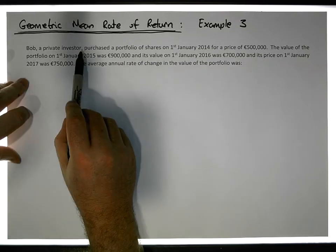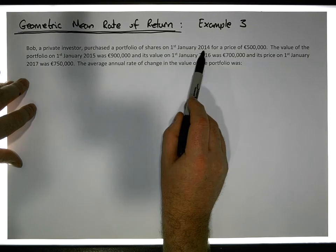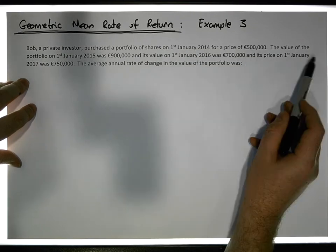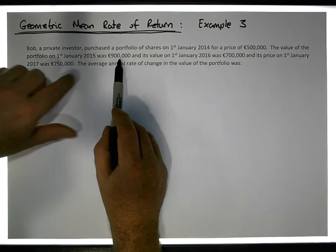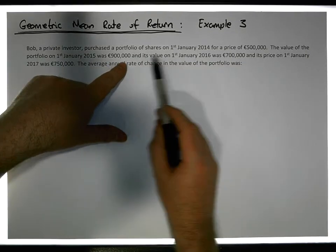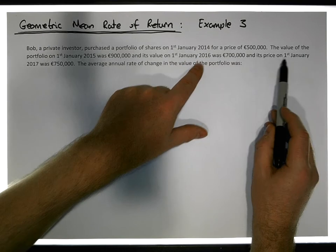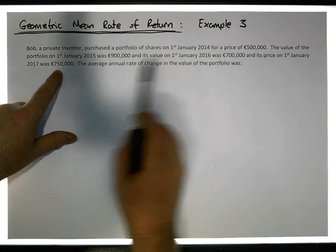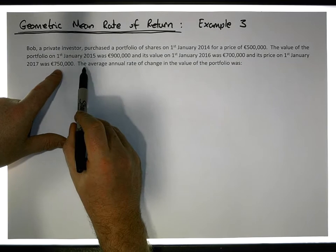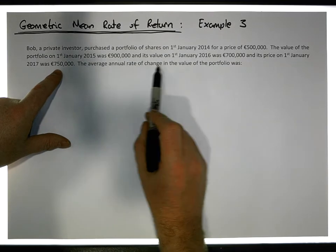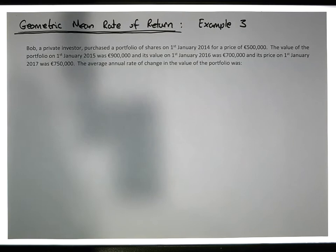So let's have a look at this scenario. Bob's a private investor. He purchased a portfolio of shares on the 1st of January 2014 for €500,000. The value of the portfolio on the 1st of January 2015 was €900,000, so it increased. The following year the value was €700,000, so it decreased, and its price on January 2017 was €750,000, so there was another increase. We want to calculate the average annual rate of return with respect to the value of this portfolio.